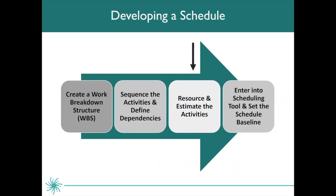Next, what you'll want to do is resource and estimate the activities. When we're talking about estimating, we're talking about cost and duration — how long is it going to take to complete this work? What we're going to be focusing primarily on today is entering the project schedule into Smartsheet and setting the schedule baseline. A schedule baseline is the original approved scope of work that needs to be accomplished — this is what you measure progress against once you move into the execution phase. When people ask 'are we ahead of schedule or behind schedule,' they are talking about your current state in comparison to that baseline.